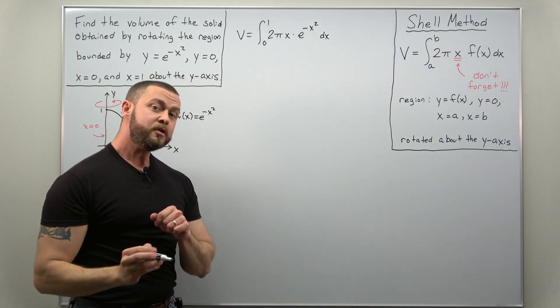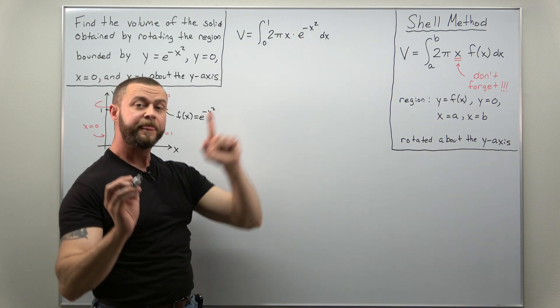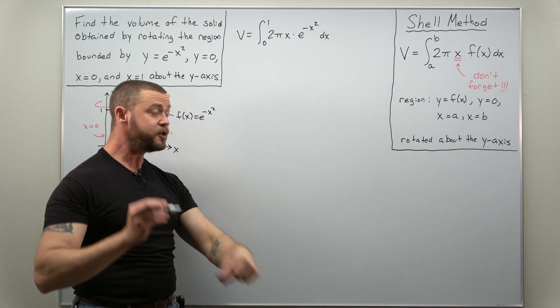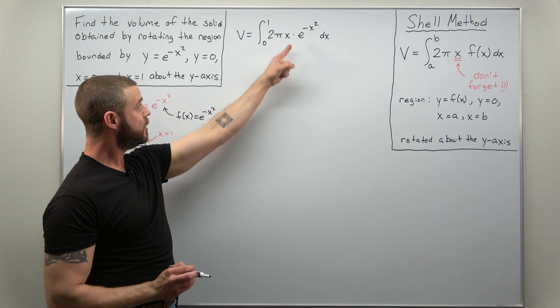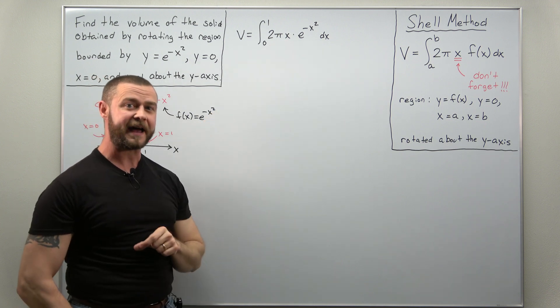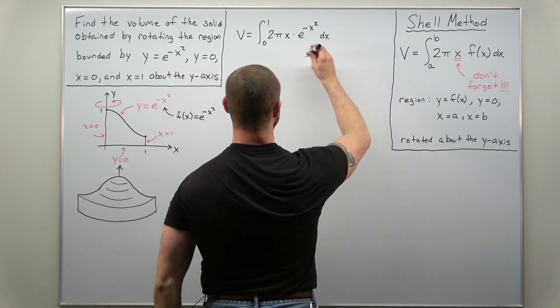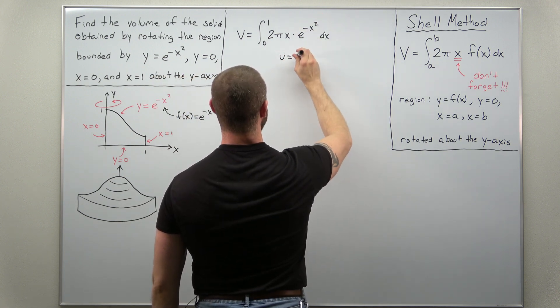And what you should notice is the derivative of x squared gives you x to the first power. So if we choose our u involving x squared, the differential du will contain that factor of x. So let's go ahead and choose as our substitution here. We're going to go with u as negative x squared.